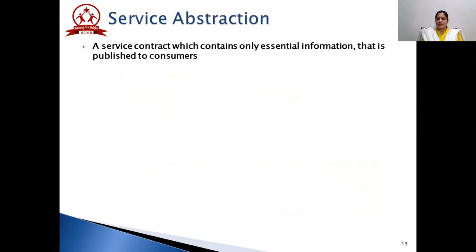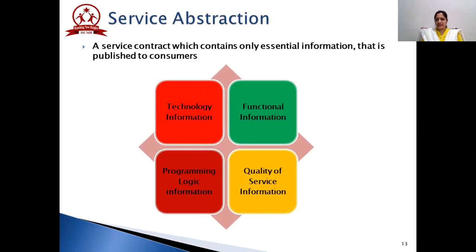Service abstraction talks about hiding complexity from the requester that is not required for the requester to know about. There are four types: technology information abstraction, functional information abstraction, quality of service information, and programming logic information. The requester need not know what technology is behind the service, how functionalities are implemented, what system resources are used for quality of service, or what programming logic is used. Service abstraction deals with hiding all these complexities from the requester.